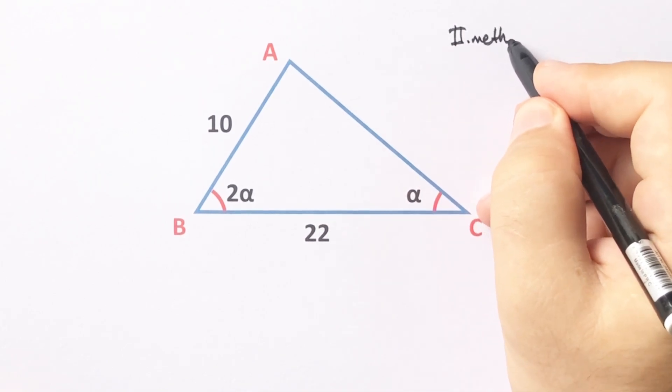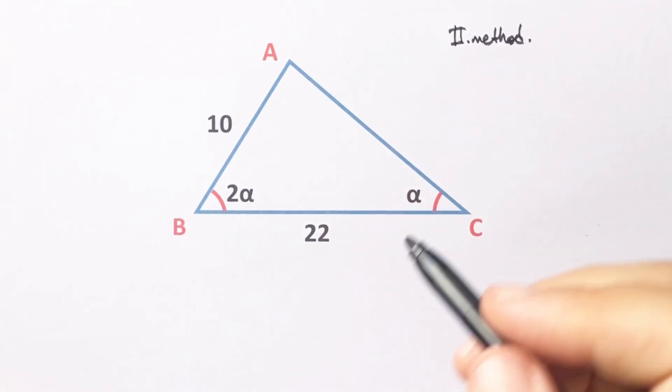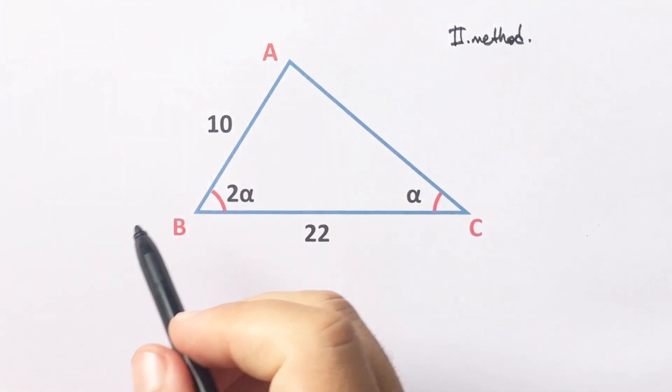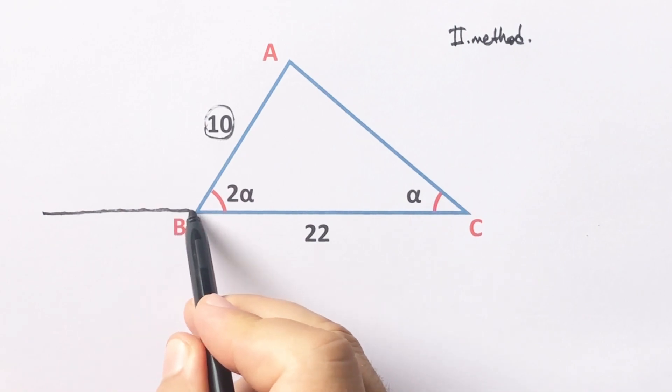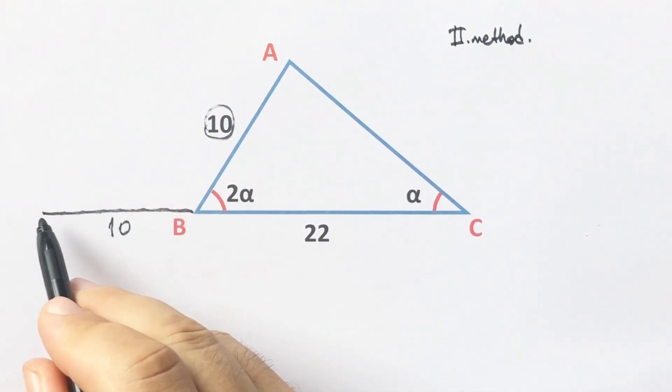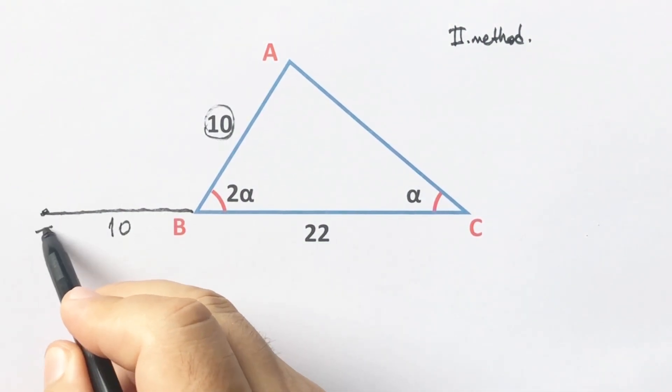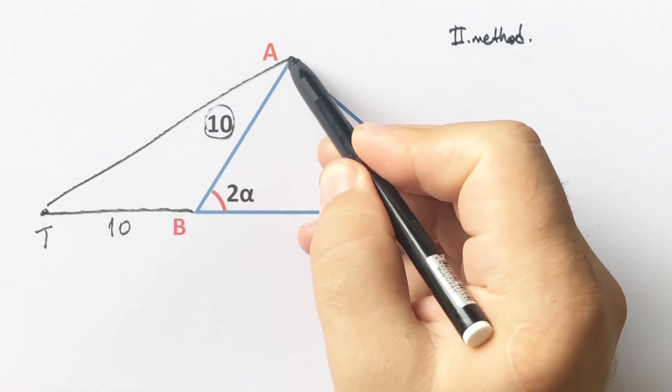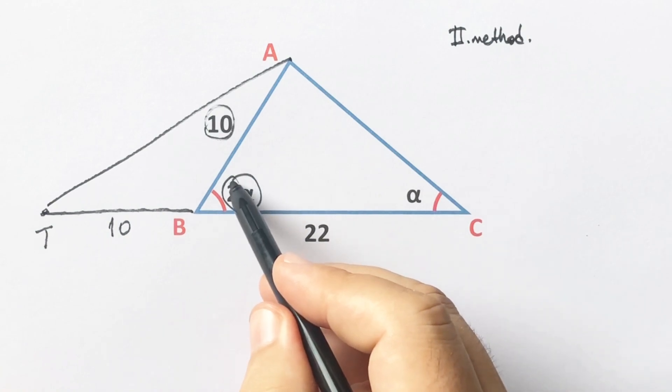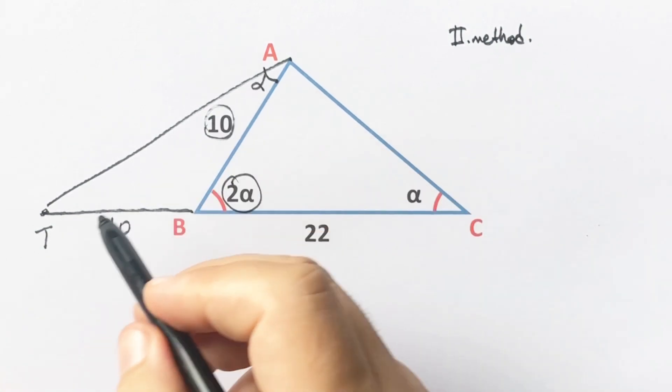Notice that if the base angles ratio is 2 to 1, that means if we extend this corner as long as 10, and then let's call here T point, and then if we connect these two points, we get an isosceles triangle, right?